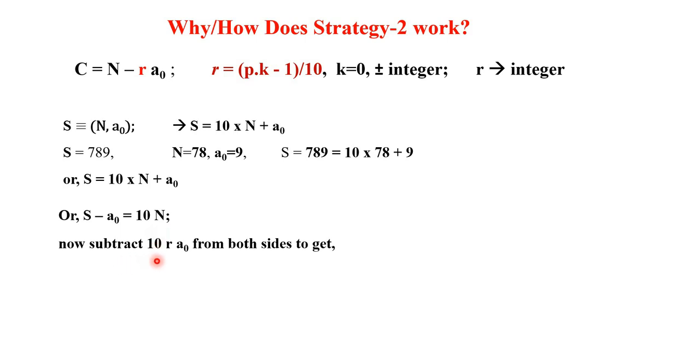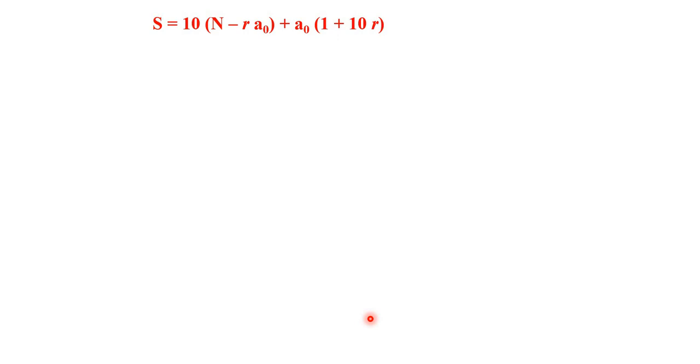Now a trick, subtract 10ra₀ from both sides of this equation to get S minus a₀ minus 10ra₀ and on your right 10N minus 10ra₀. A little bit of manipulation we will do. So here we will take common a₀ from here and here. So you get (1 + 10r) and here we will take common 10. So we will get N minus ra₀. So now, you keep your S on your left and bring all the other terms on your right. So 10(N - ra₀) plus a₀ into (1 + 10r), a₀ into (1 + 10r). So we can demand that S to be divisible by p, the right hand side has to be divisible by p.